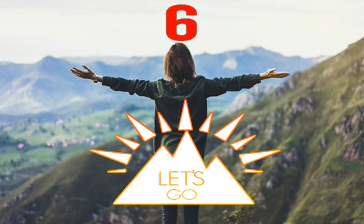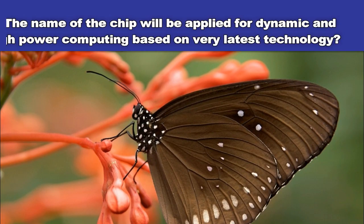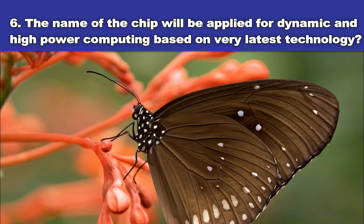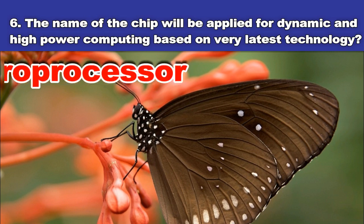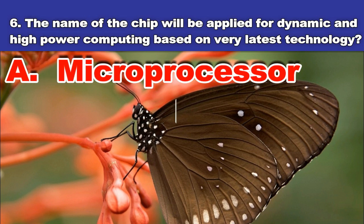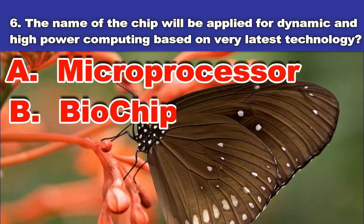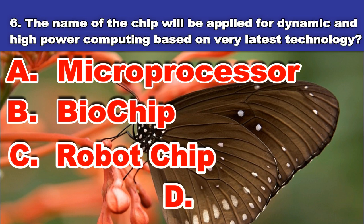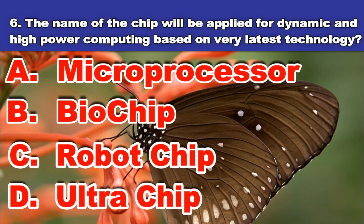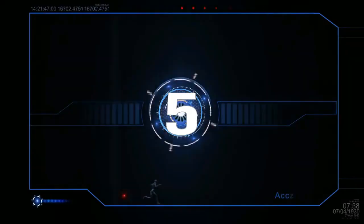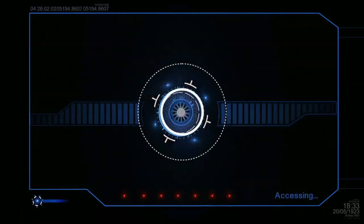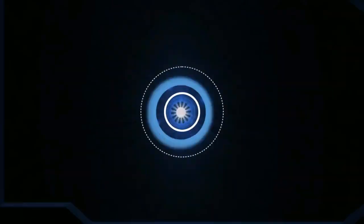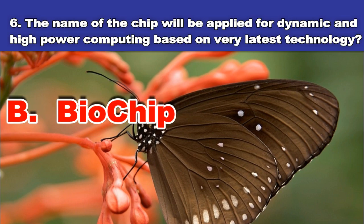Sixth question. The name of the chip that will be applied for dynamic and high-power computing based on the very latest technology? A. Microprocessor. B. Biochip. C. Robot chip. D. Ultra chip. And the answer is: biochip.